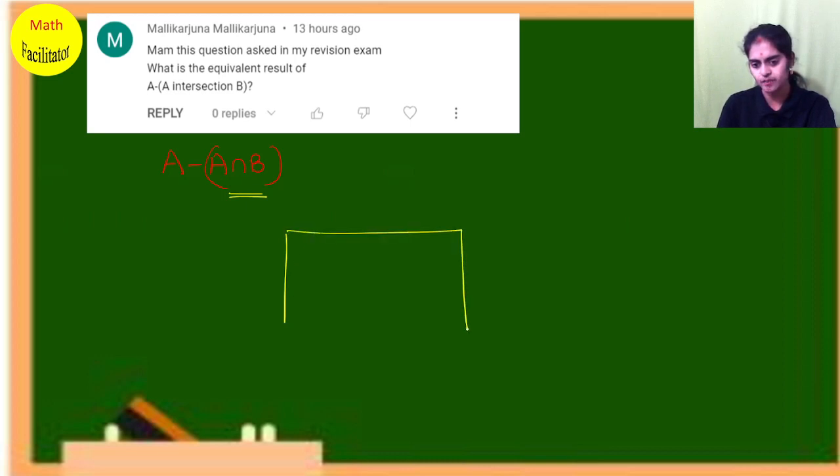Suppose I take a Venn diagram with two sets A and B. What is A intersection B? A intersection B is this part - the common part between them.